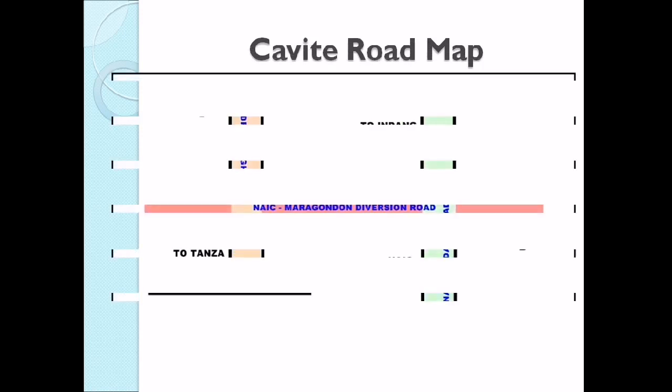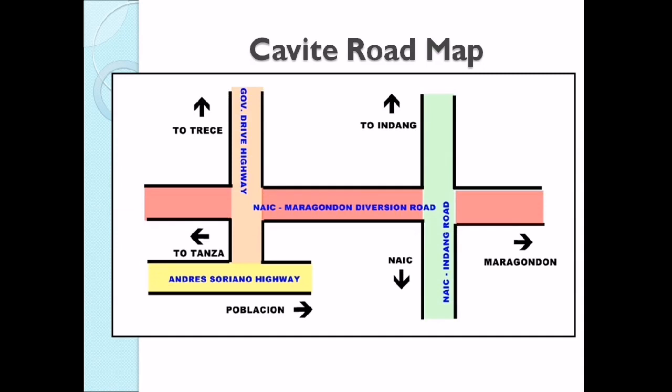Now, let us find out the application of lines around us. One of the applications of the different kinds of lines is on roads. Here is an example using the Cavite Roadmap. We will study it to answer guide questions about the different kinds of lines.